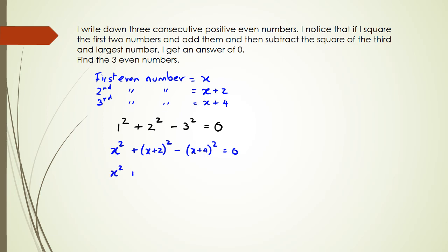So next step is to expand the brackets. So we have x plus two, multiplied by x plus two, minus x plus four, multiplied by x plus four, and that's equal to zero.